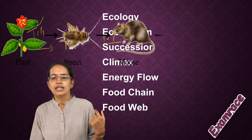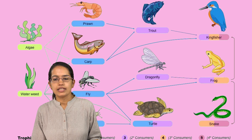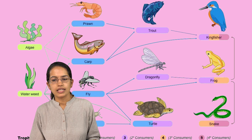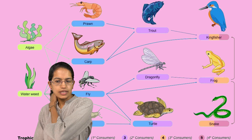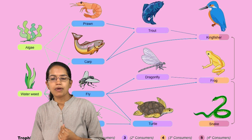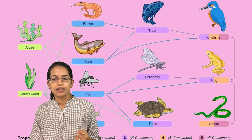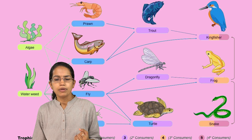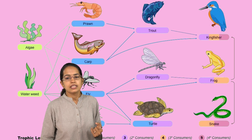For example, you have plants being eaten by a grasshopper, the grasshopper being eaten by a bigger insect, and finally by a snake — this is a food chain. But if this grasshopper is being eaten by multiple organisms, which are further eaten by multiple organisms, it forms a web known as a food web.